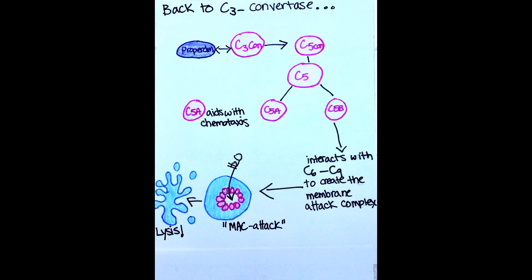C5 convertase splits C5 into C5A and C5B. C5A helps in the inflammatory response and draws white blood cells to the site in a process called chemotaxis. C5B interacts with C6 through C9 proteins to create a membrane attack complex, or MAC. The C9 proteins form a ring that inserts itself into the foreign cell membrane.